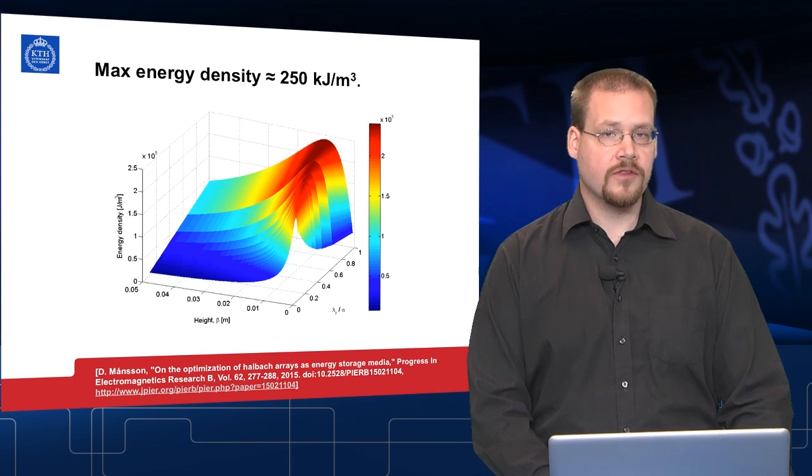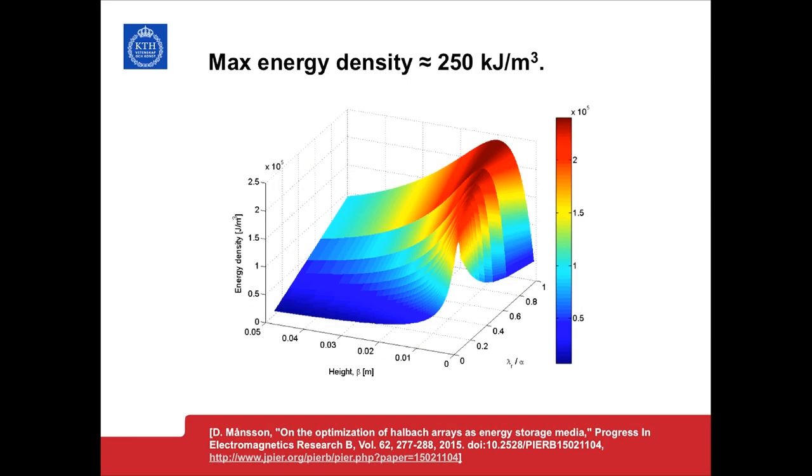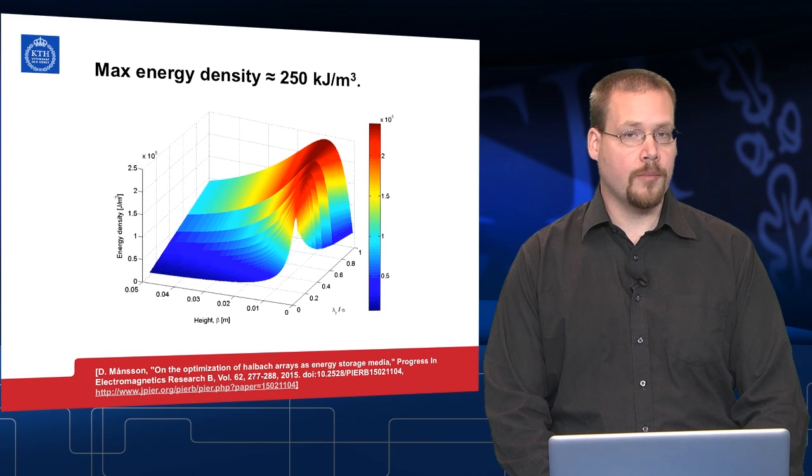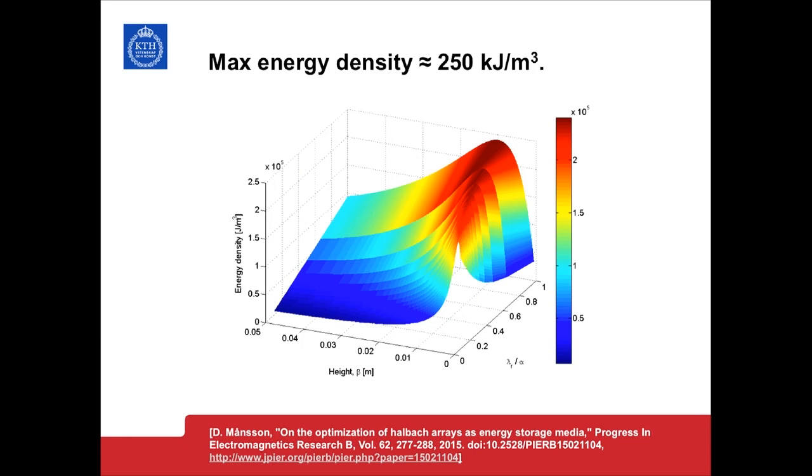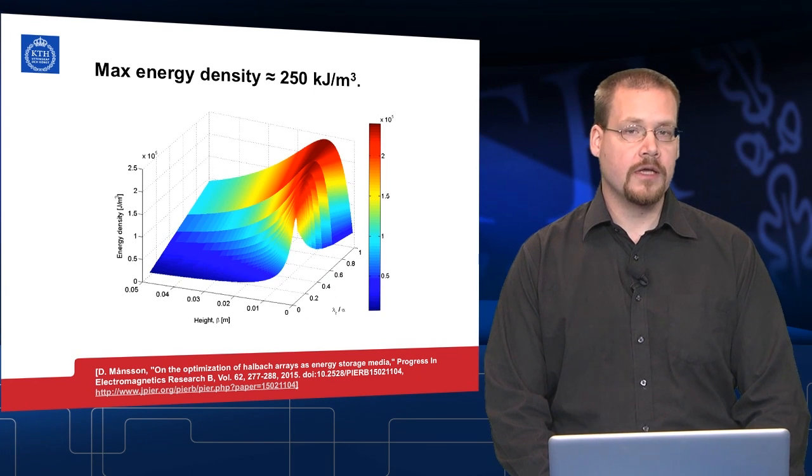Here we show the energy density that is the energy per unit volume for the configuration. Again, we see that the storage system is very much dependent upon the dimensions and wavelengths. An optimal point can be seen for which the energy density reaches a maximum value of approximately 250 kJ per cubic meter. This is comparable to some other types of commercial storage systems. It is interesting to note that if we here increase the thickness of the arrays, we will move away from this optimal point. This means that it is better to use additional magnetic material to form new Halbach arrays than to increase the dimensions of the existing one.